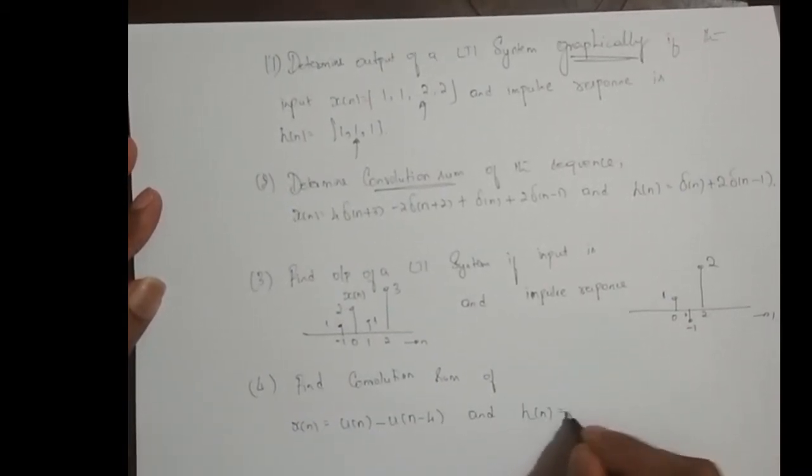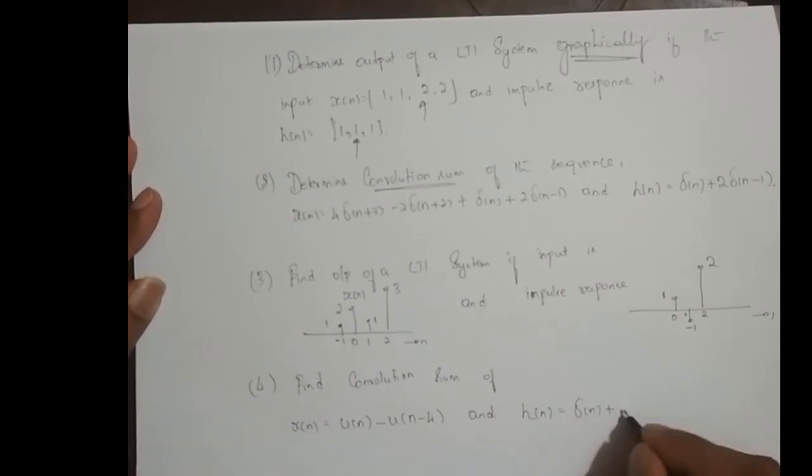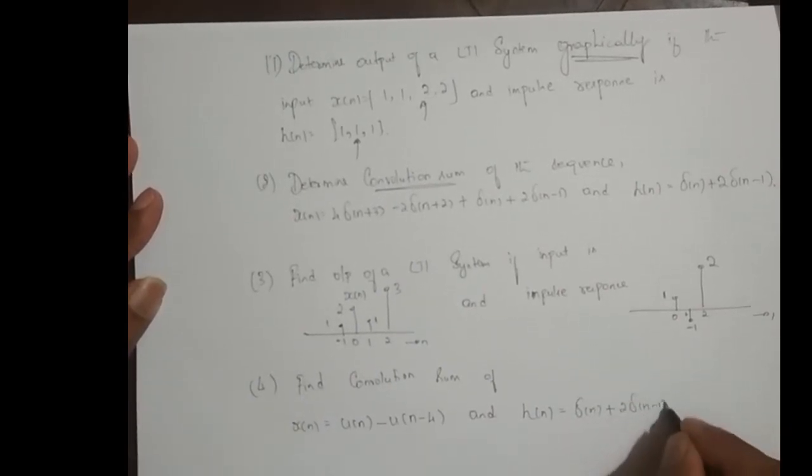and h of n is equal to delta of n plus 2 times delta of n minus 1 plus 3 times delta of n minus 2.